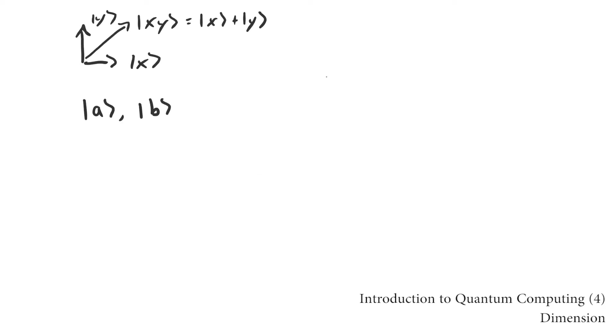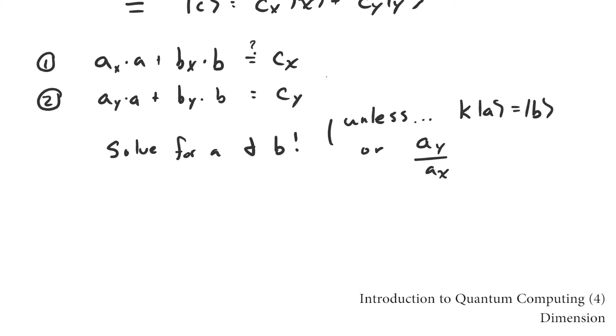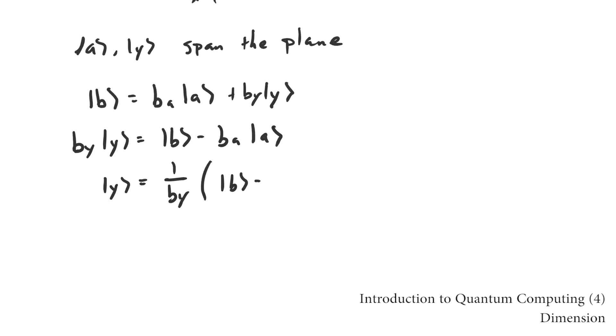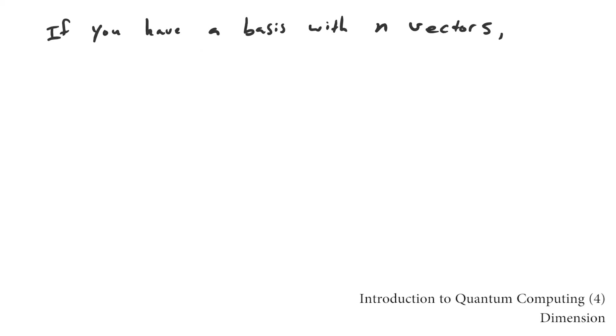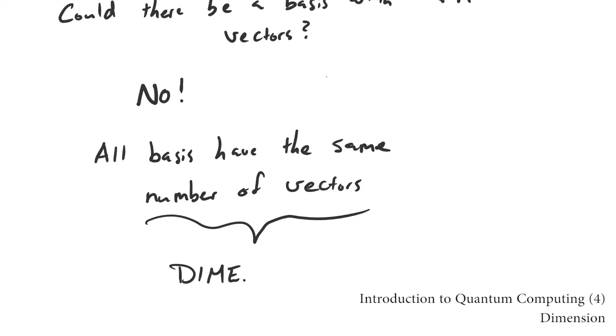If a vector space has a basis consisting of n vectors, then any set of more than n vectors is going to be linearly dependent, and hence can't be a basis. This implies that all bases have the same number of vectors. This unique number is called the dimension of the space.